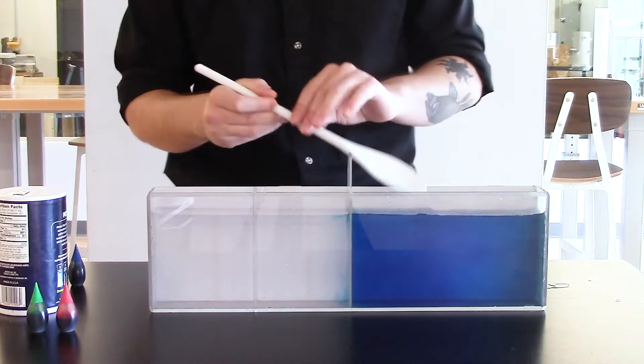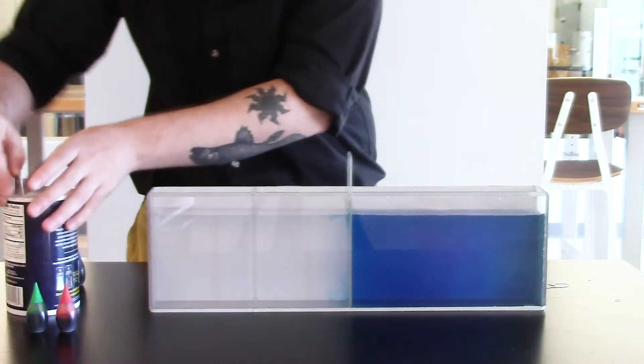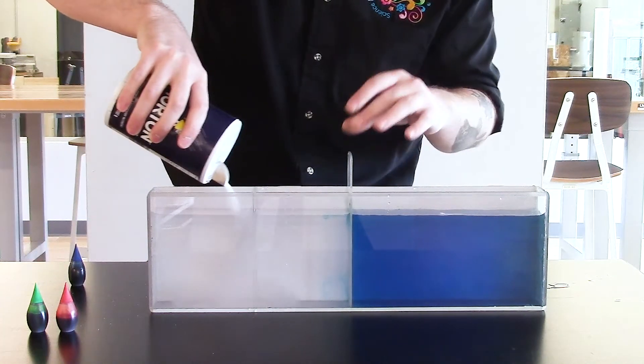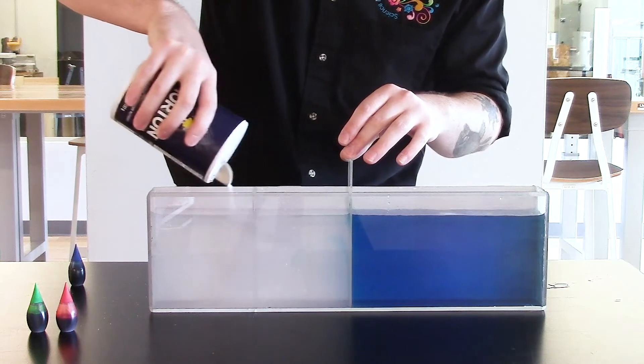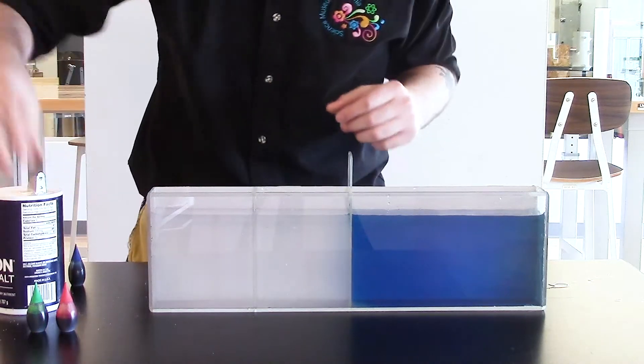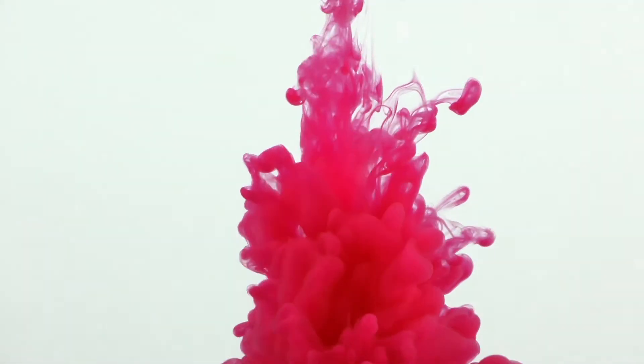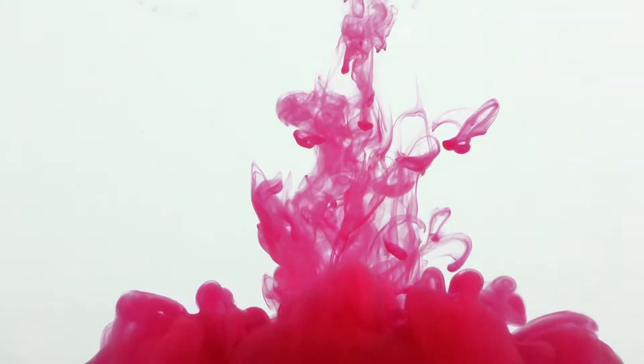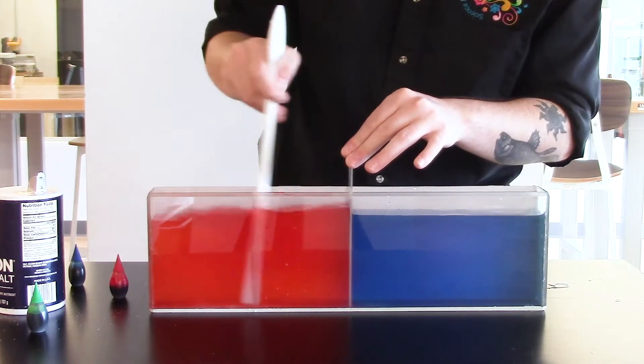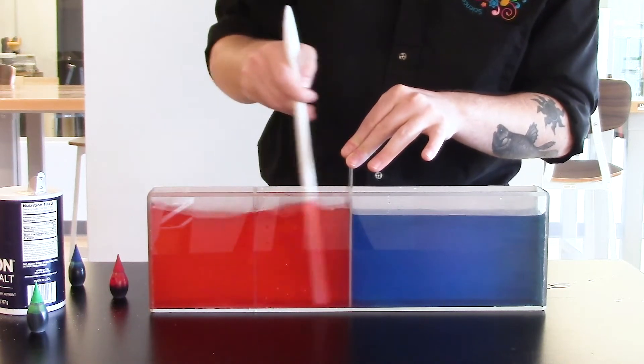And then on our right side we're going to have some salt water. A good amount of salt in there. And we'll color this one red. Now we've got to make sure we stir up our salt into the water. Otherwise it won't dissolve and our experiment won't work.